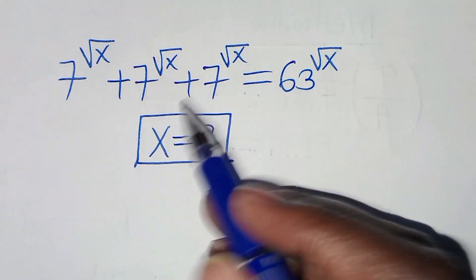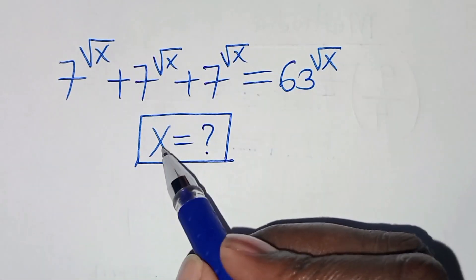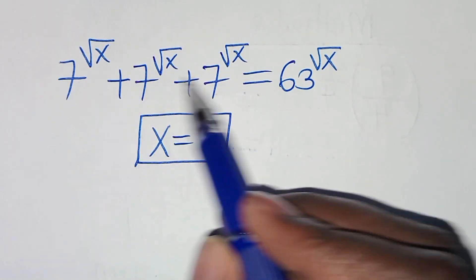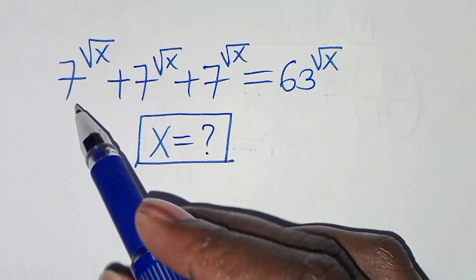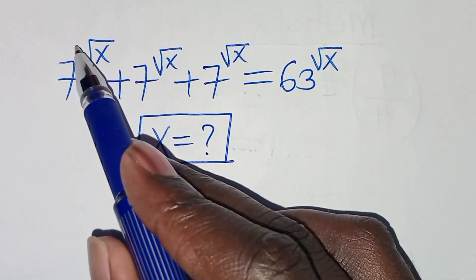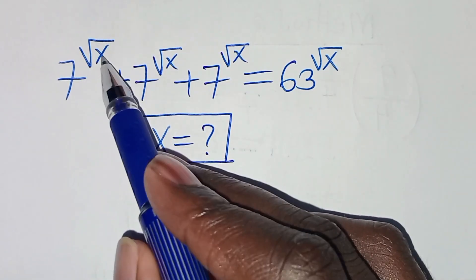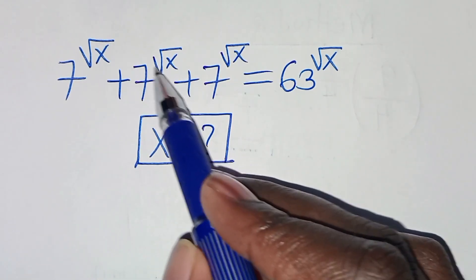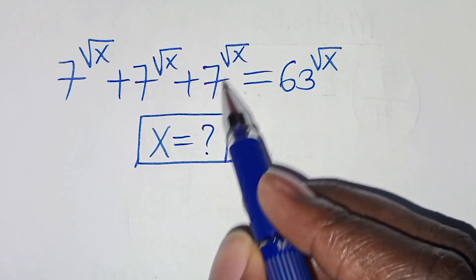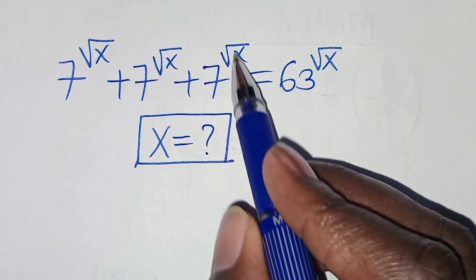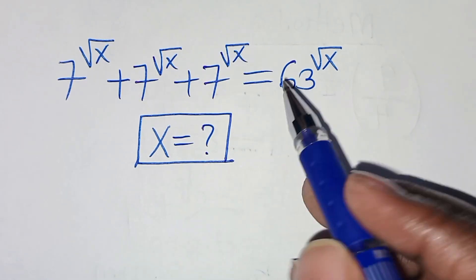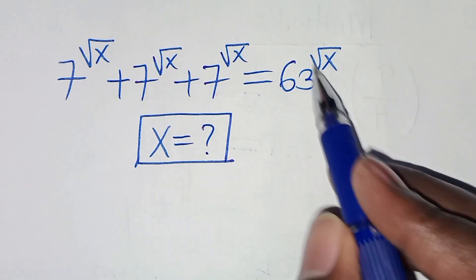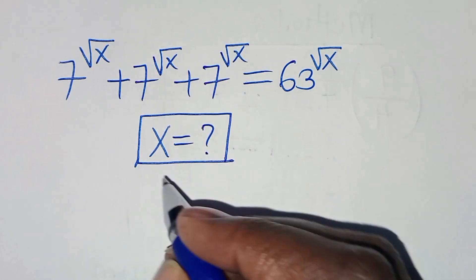Hello everyone, you are welcome to solve for the value of x given this nice algebra equation, which is 7 to the power of square root of x plus 7 to the power of square root of x plus 7 to the power of square root of x. This is equal to 63 raised to the power of square root of x.